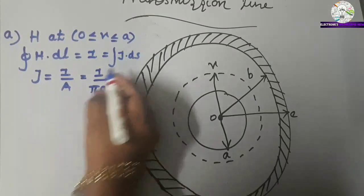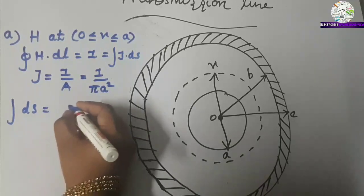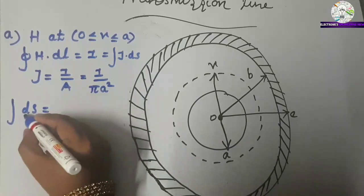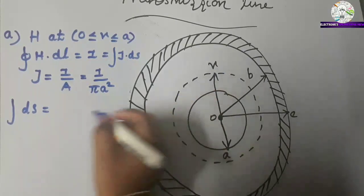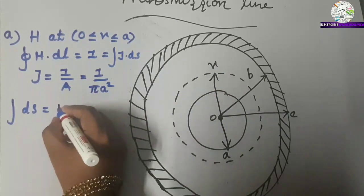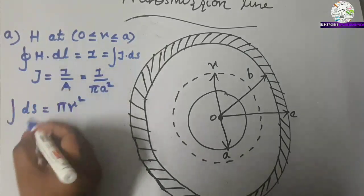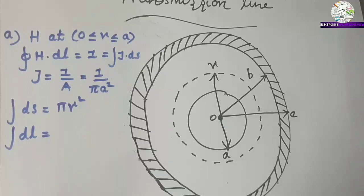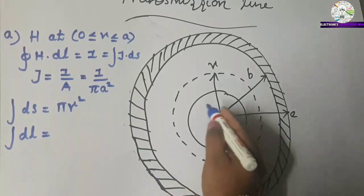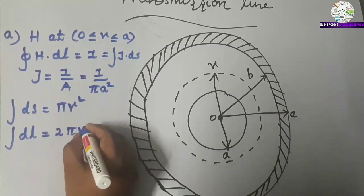The integral of dS is equal to the surface area for a conductor of radius R, which is pi R squared. The integral of dL is equal to the circumference for the conductor of radius R, so the integral of dL equals 2 pi R.